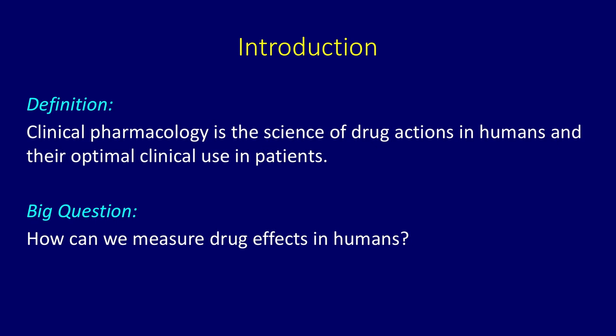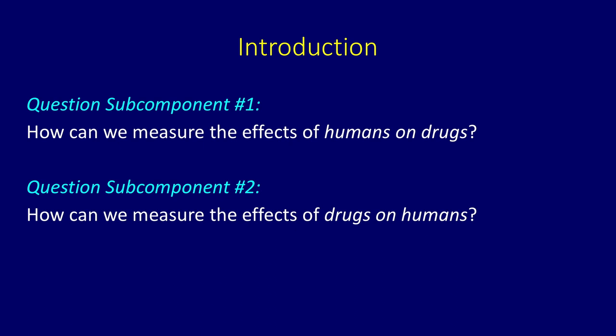That large question can be broken down into two main sub-components. The first is how can we measure the effects of humans on drugs — what does the human body actually do to the drug? The second is how can we measure the effects of drugs on humans — what are the clinical effects and how can we infer those from certain indirect measurements?